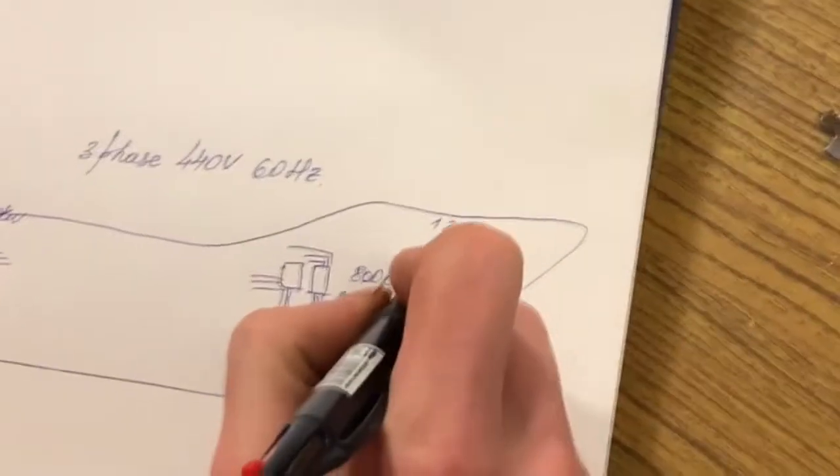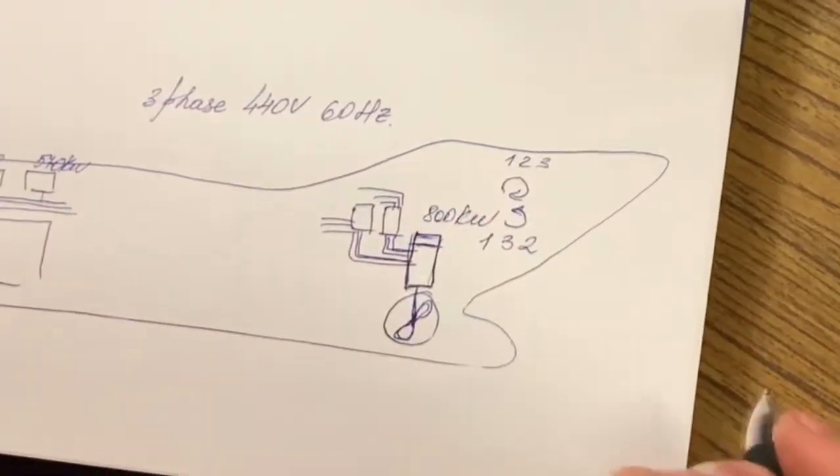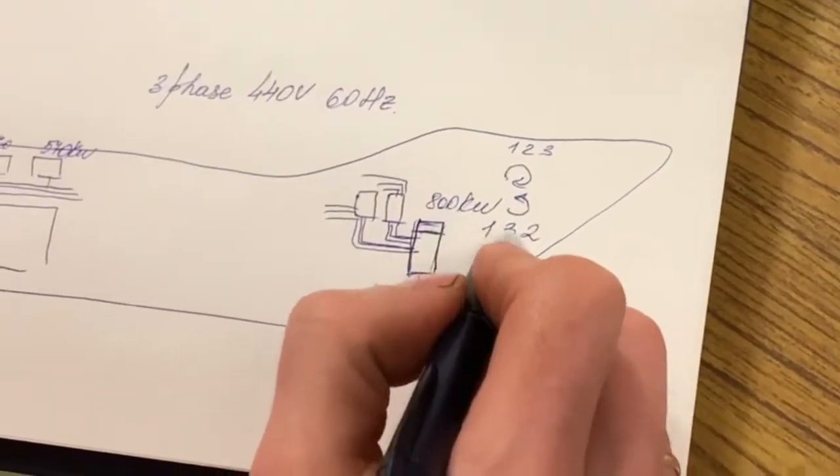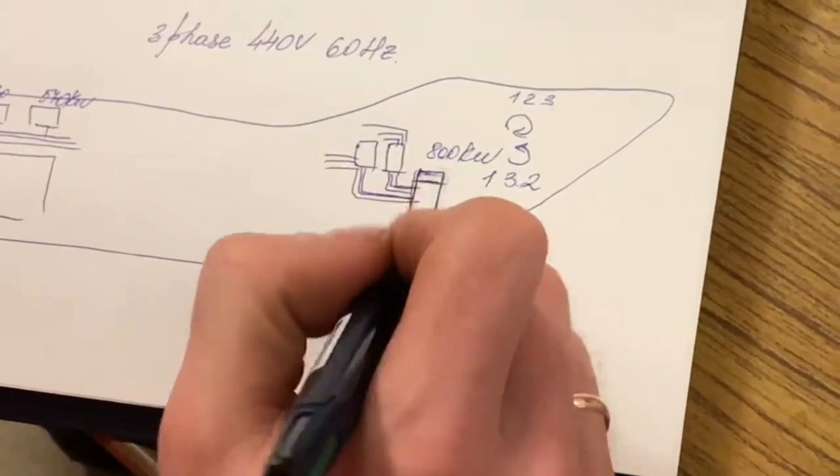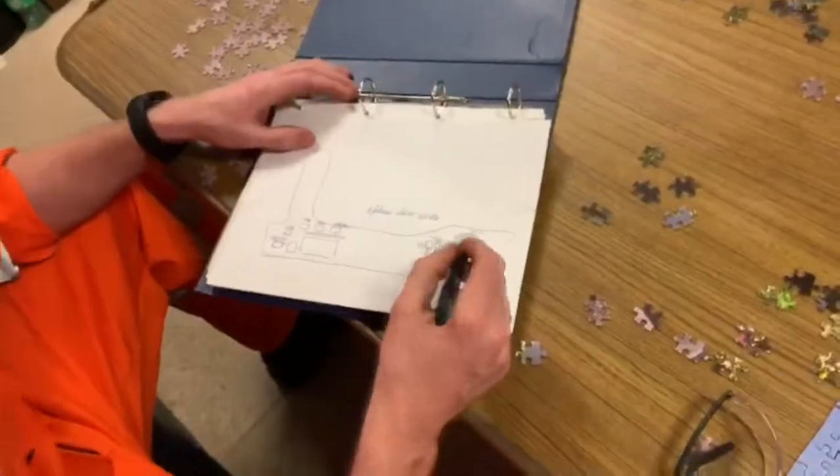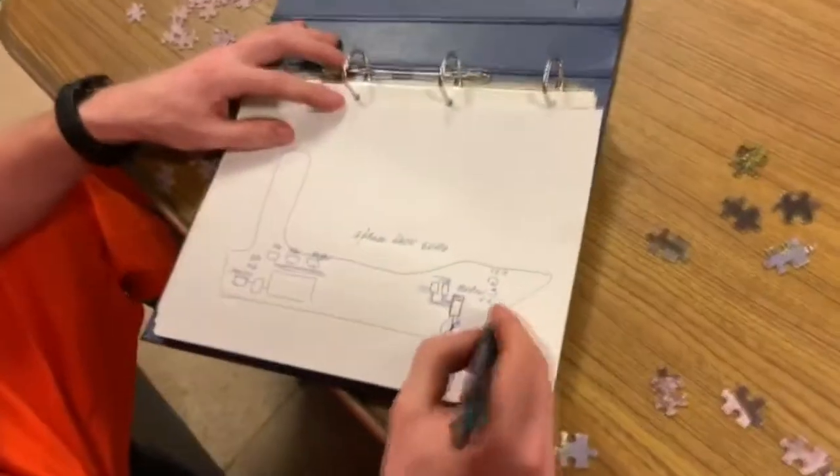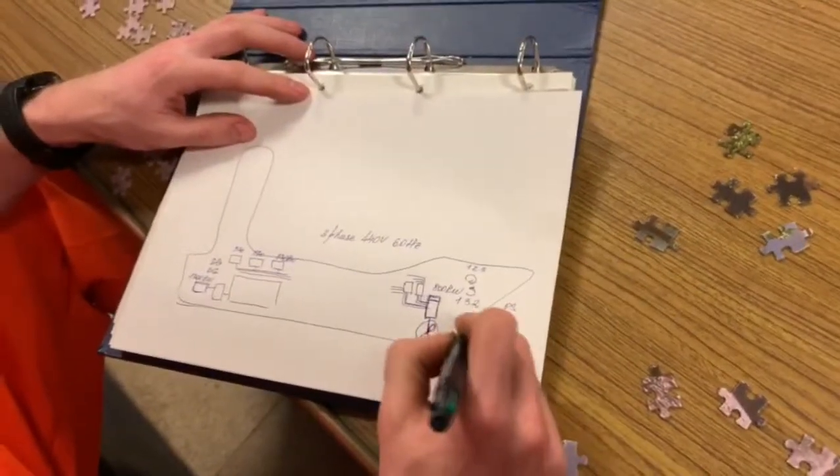If you want to rotate it counterclockwise, it will be one, three, two. So connected a bit different. So if you are changing one phase, the motor starts rotating in the different way. And when the electric motor starts rotating in the different way, it is moving port side or starboard side.